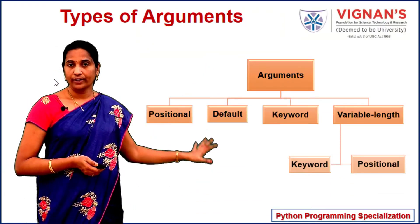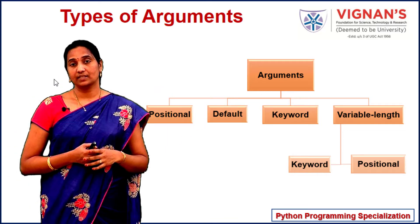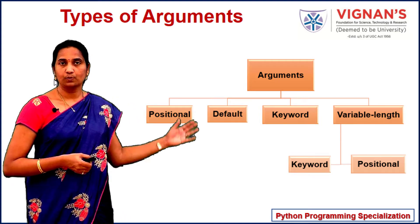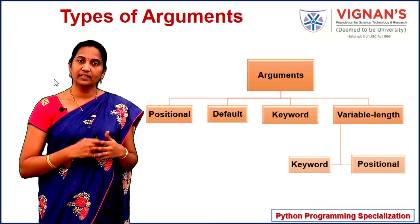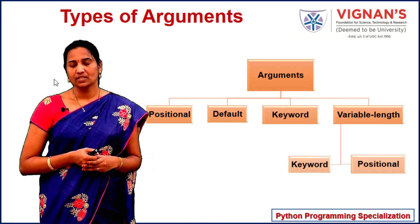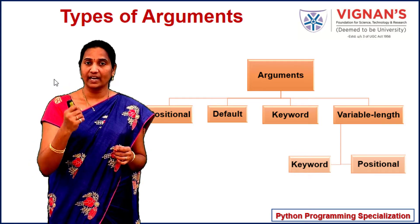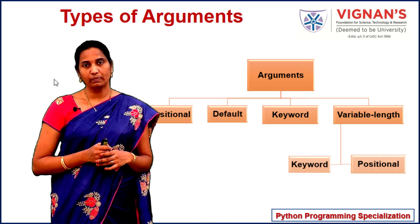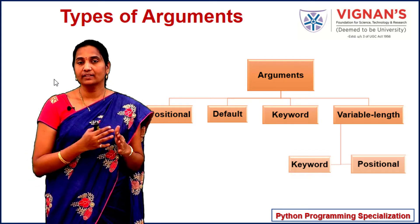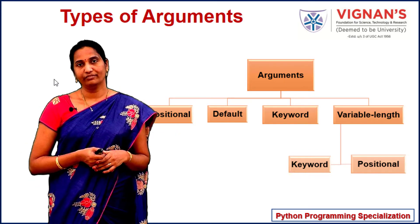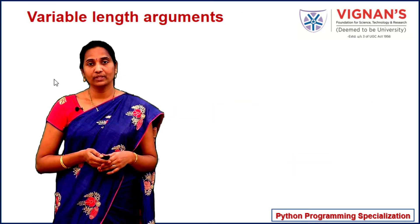These are all the types of arguments that are supported by Python. Unlike other languages like C, C++, Java, Python supports sending various types of arguments to functions: positional arguments, where the parameters need to be passed in the same order they appear in the function definition; default arguments, which you can omit while calling the function because a default value is assigned while defining the function; keyword arguments, which allow you to send parameters in arbitrary order; and variable length arguments, which allow you to send a variable number of arguments to a function.